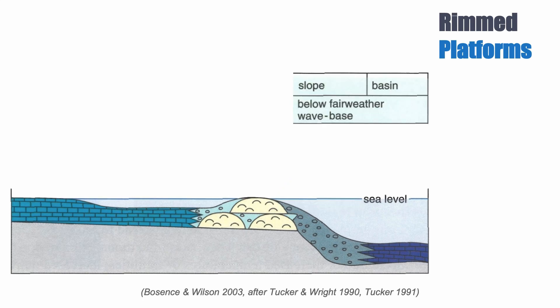We can look at the fore reef — what comes before the reef, so towards the basin — and there we have the slope as an environment and the basin as another environment. Both of these environments are below the fair weather wave base. In the basin, we expect to have shale and pelagic limestone, and the dominant texture, because we're in such a protected environment below fair weather and even below storm wave base, are mudstones.